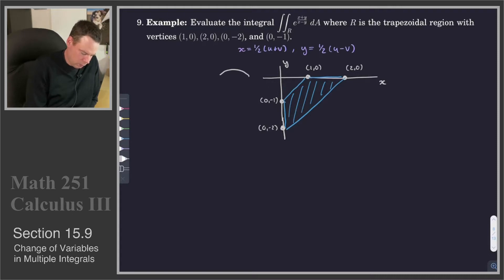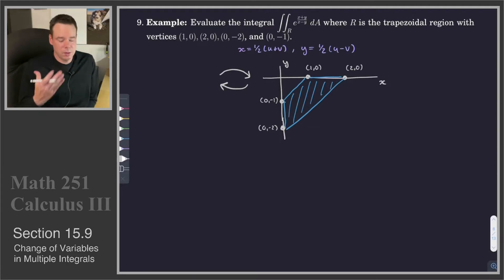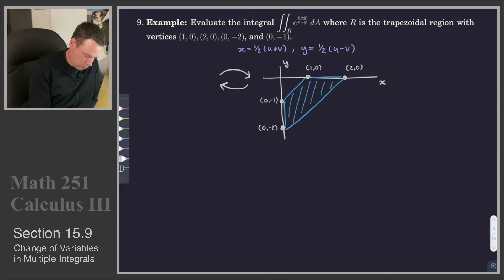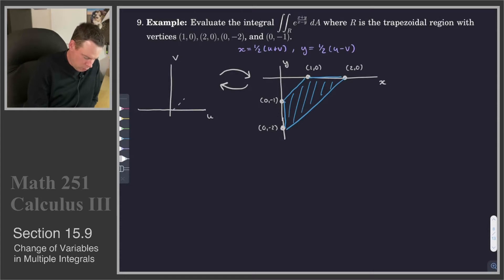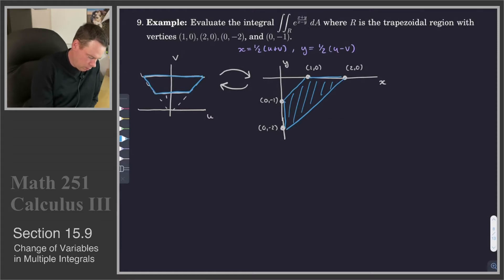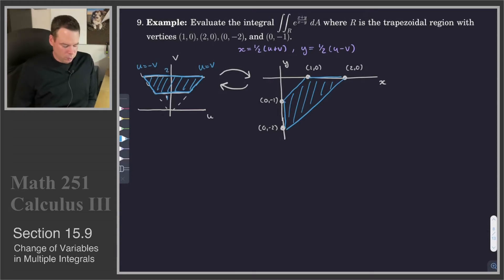Under that change of variables, we have the ability to take this region and map it back into another region in terms of u, v coordinates. The region in u, v coordinates is trapped between v going from 1 up to 2, and u is trapped between negative v and v. So u equals negative v and u equals v, and v went from 1 up to 2.